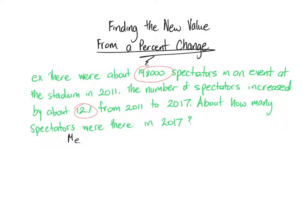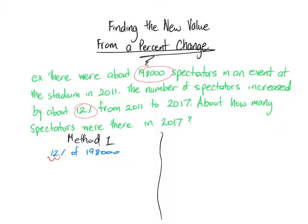In order to accomplish this, there are two methods I'd like to show you, and you can pick whichever one you prefer. The first method is to figure out what 12% of 198,000 is and add it on at the end. So we find 12% of 198,000: converting 12% to a decimal, we move the decimal two places to the left and get 0.12. Then 0.12 multiplied by 198,000 gives us 23,760.